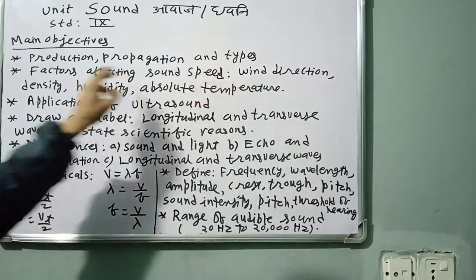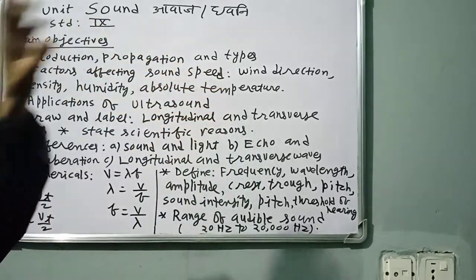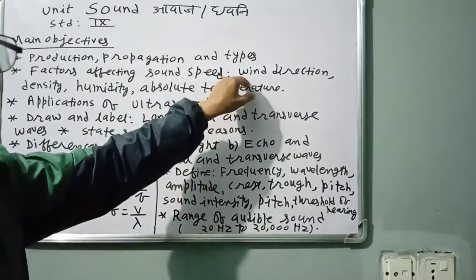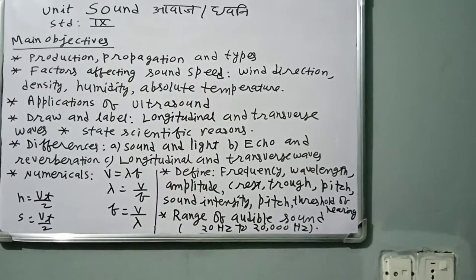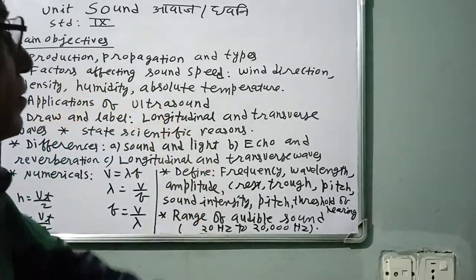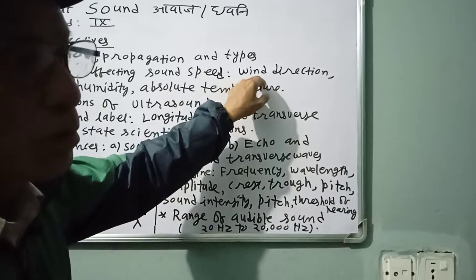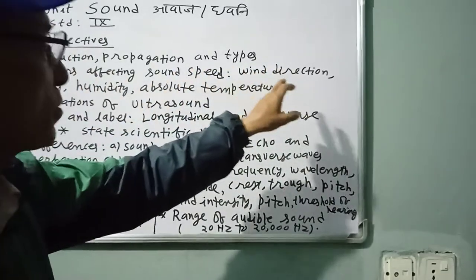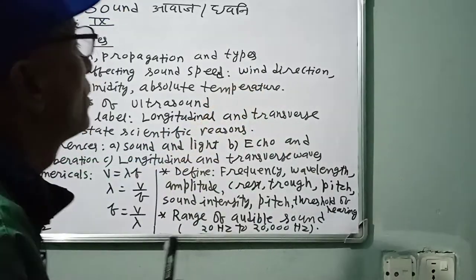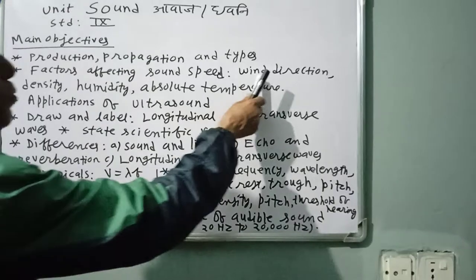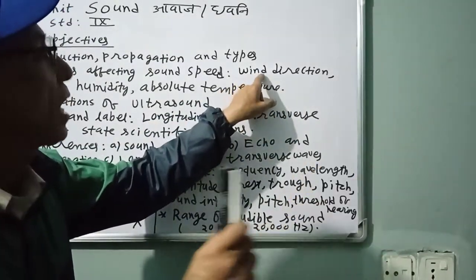Factors affecting sound speed: pressure was initially taken as a factor, but by experiment it was found that pressure has no role in affecting sound speed. However, wind direction does matter — sound speed is more in the same direction as the wind.